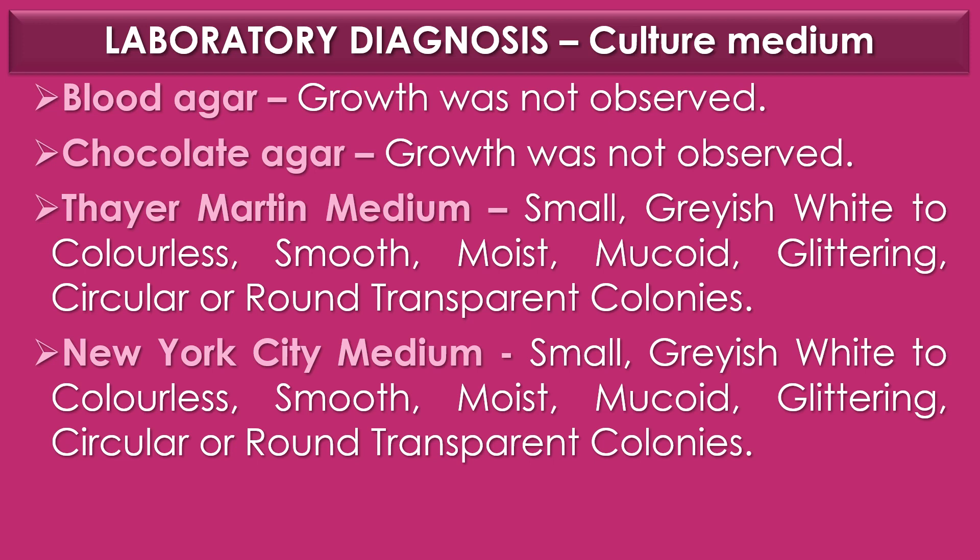Martin and Lester added an additional antibiotic, trimethoprim, to make the medium more selective. In New York City medium, Neisseria gonorrhoeae shows small, grayish-white to colorless, smooth, moist, mucoid, glittering, circular or round, transparent colonies.